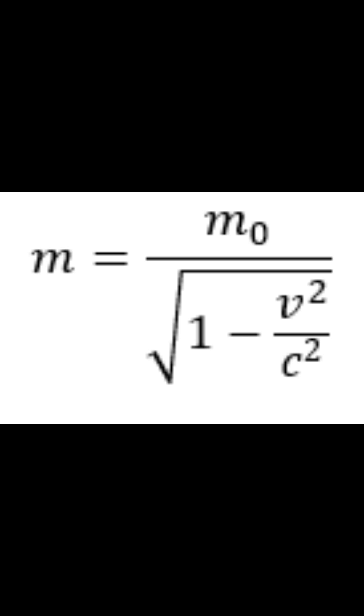The formula goes: mass equals rest mass divided by the square root of 1 minus velocity squared divided by the speed of light squared.